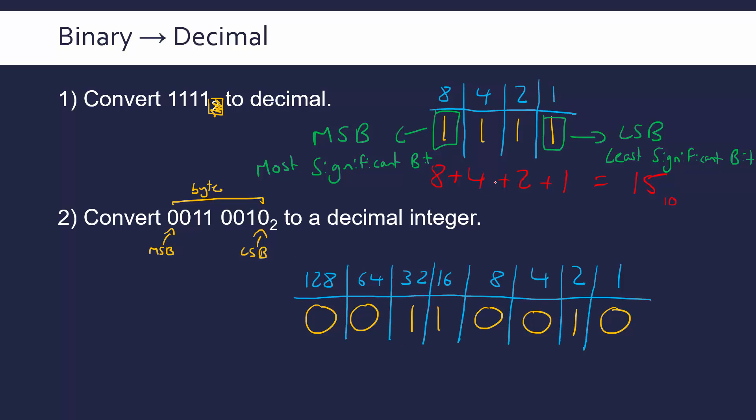Okay and now all I'm doing, like I said before, is adding up the column headings when I've got a 1 written underneath. So here I've got 32 plus 16 plus 2, which you can do in your head potentially or do it as a column method. This is 50. Again I can do a little 10 to show it is in base 10.